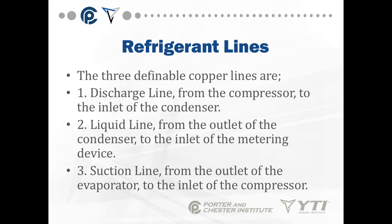There are three definable copper lines in a refrigeration system. First, you have a discharge line that goes from the compressor to the inlet of the condenser. Then you have a liquid line from the outlet of the condenser to the inlet of the metering device. Then you have a suction line from the outlet of the evaporator to the inlet of the compressor.